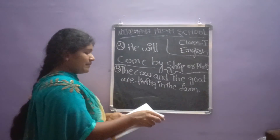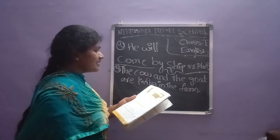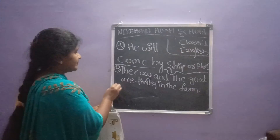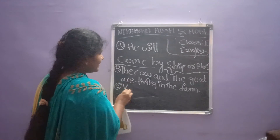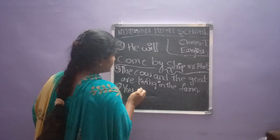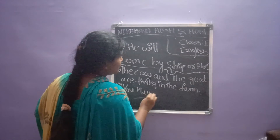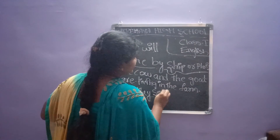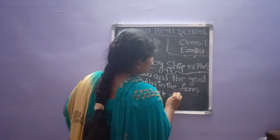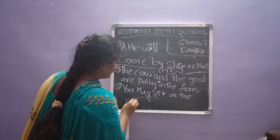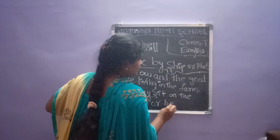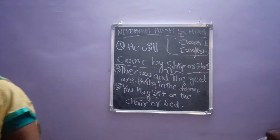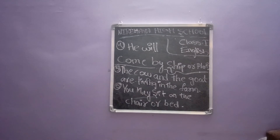Sixth one: chair or bed. By using these words: you may sit on the chair or the bed. Y-O-U, you — M-A-Y, may — you may sit — S-I-T, sit — on the chair, or bed. You may sit on the chair or bed. Finish that one, children.